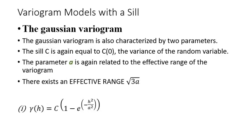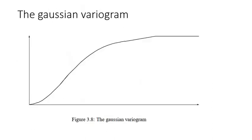The next type is called the Gaussian variogram. The Gaussian variogram is also characterized by two parameters: the sill and the range. The formula is given by C times (1 minus e to the power of minus h-squared over 3a-squared). It tails off at the beginning and then increases up until it reaches a sill. Those are some of the variogram models with a sill.